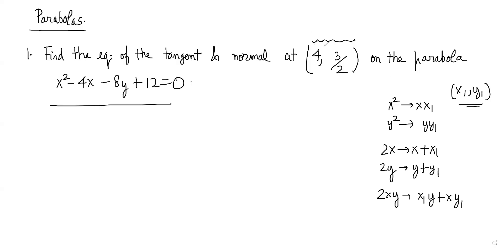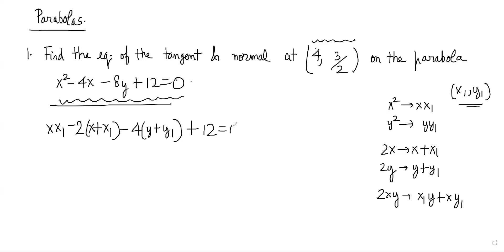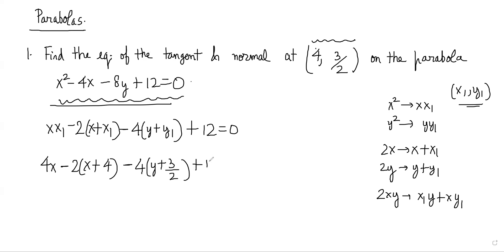Here x₁y₁ is the point at which we want to make the tangent. Our point is (4, 3/2), so x₁=4 and y₁=3/2. Doing these replacements in the general equation, we get xx₁ - 2(x+x₁) - 4(y+y₁) + 12 = 0. Putting x₁=4 and y₁=3/2 gives 4x - 2(x+4) - 4(y+3/2) + 12 = 0, which simplifies to 2x - 4y - 2 = 0, so the equation of the tangent is x - 2y - 1 = 0.